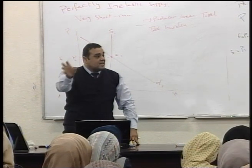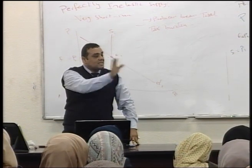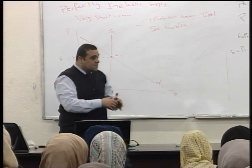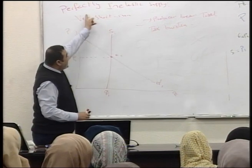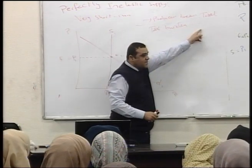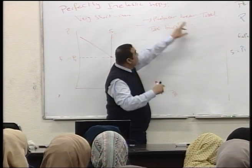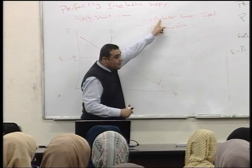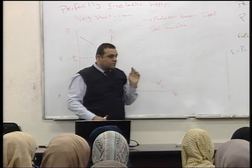In the effect of tax burden, perfectly inelastic supply equals perfectly elastic demand in terms of who bears the tax. When supply is perfectly inelastic, the producer bears the whole of the tax burden. Perfectly elastic demand: the producer also bears the whole of the tax burden.